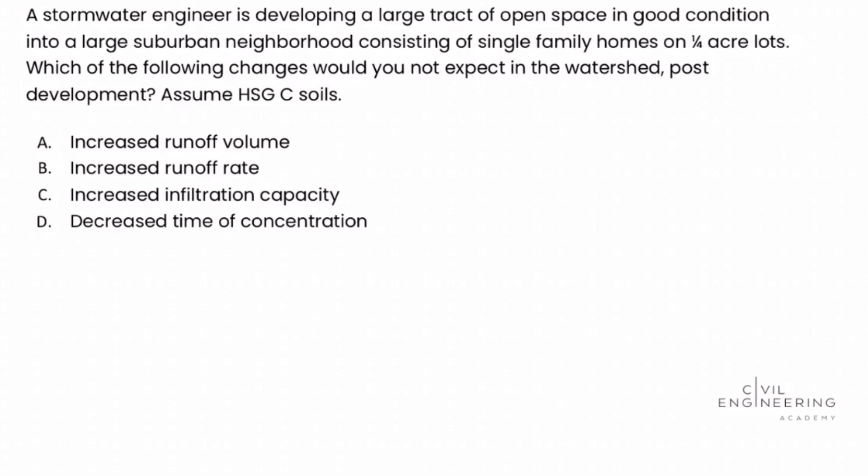A stormwater engineer is developing a large track of open space in good condition into a large suburban neighborhood consisting of single-family homes on quarter-acre lots. Which of the following changes would you not expect in the watershed post-development? Assume HSG C soils.